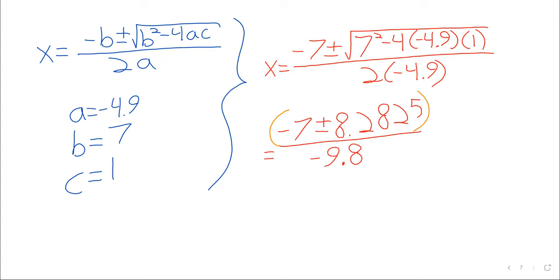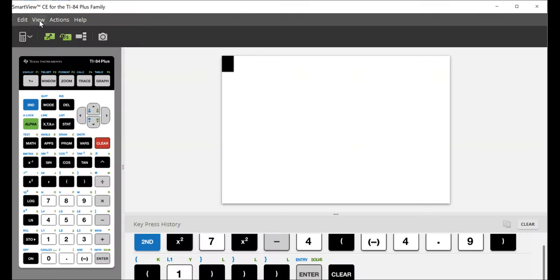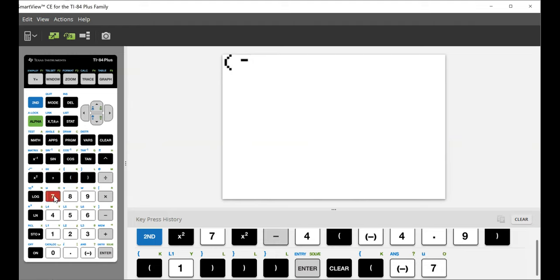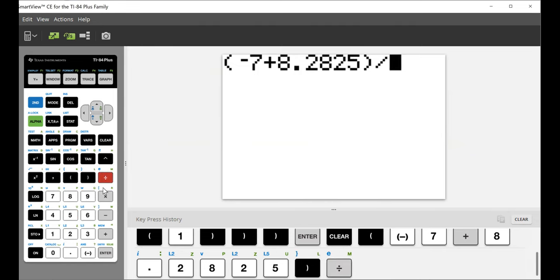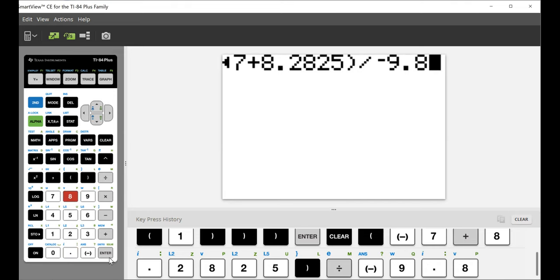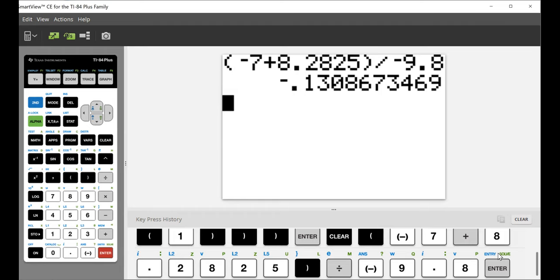And let me, because sharing the calculator causes the whiteboard to disappear, let me quickly jot this onto the physical whiteboard. Let's go to the calculator. Clear everything out. Negative 7 plus, you see plus or minus, so we're going to have to do this twice. We're going to do plus and get one solution. We're going to do minus and get another solution. Negative 7 plus 8.2825 divided by negative 9.8. I'm going to jot that onto the physical whiteboard. This is for my reference.